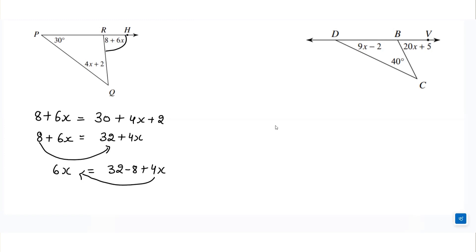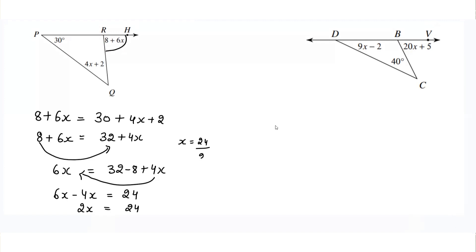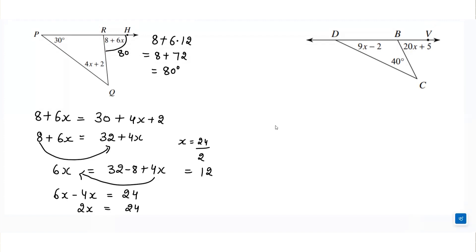Taking 4x to the left side: 6x − 4x = 24, so 2x = 24, and x = 24 ÷ 2 = 12. To find the exterior angle, we substitute x: 8 + 6(12) = 8 + 72 = 80°. So the exterior angle equals 80°.